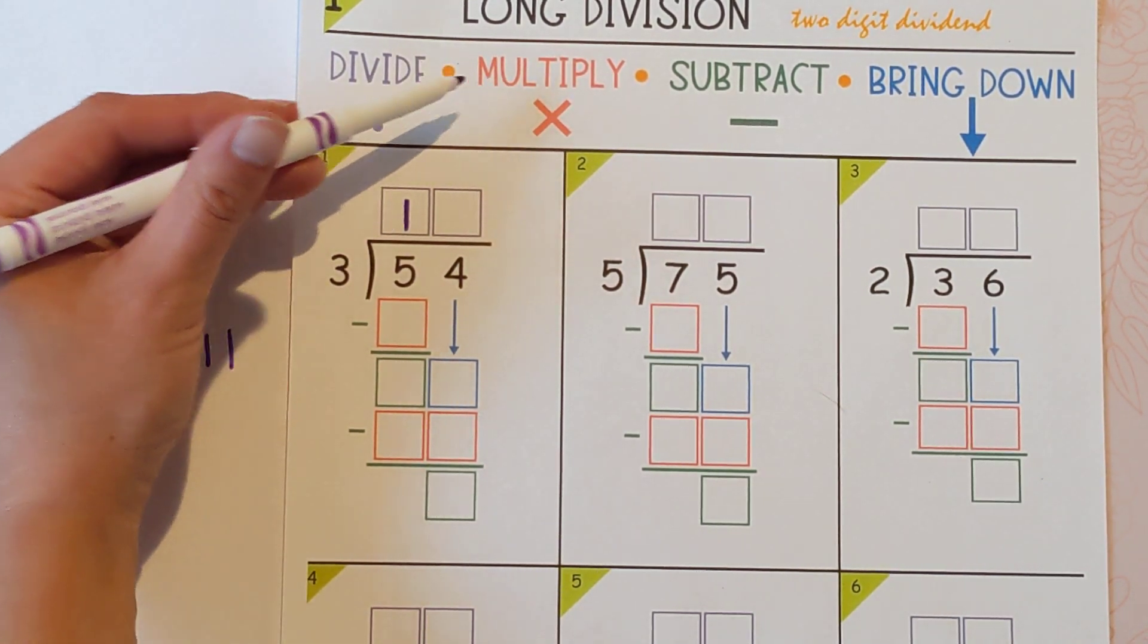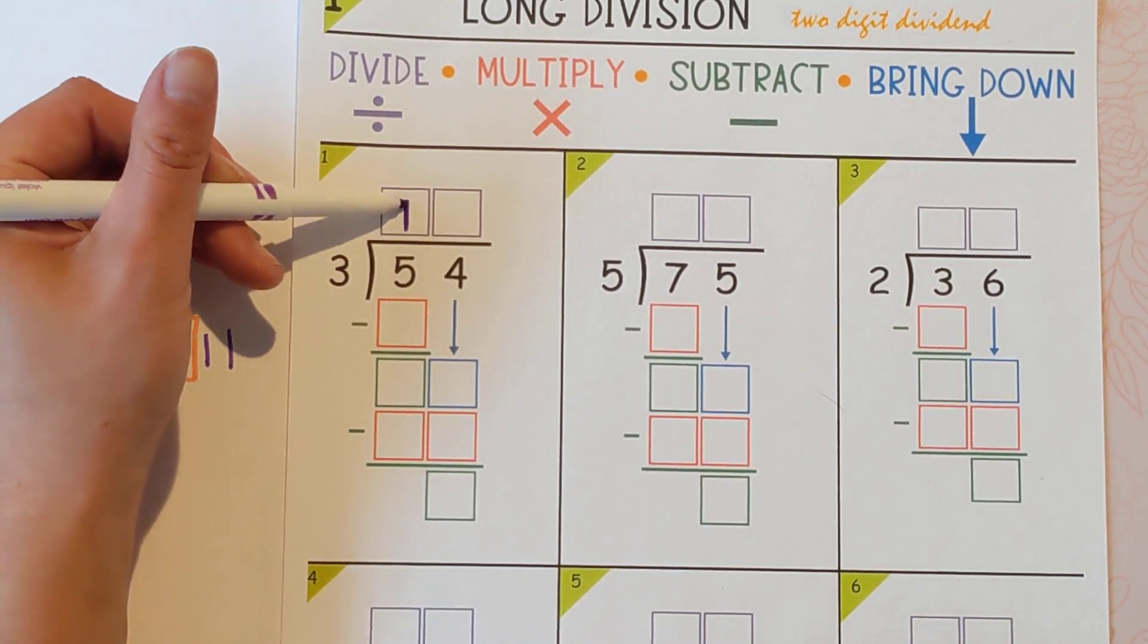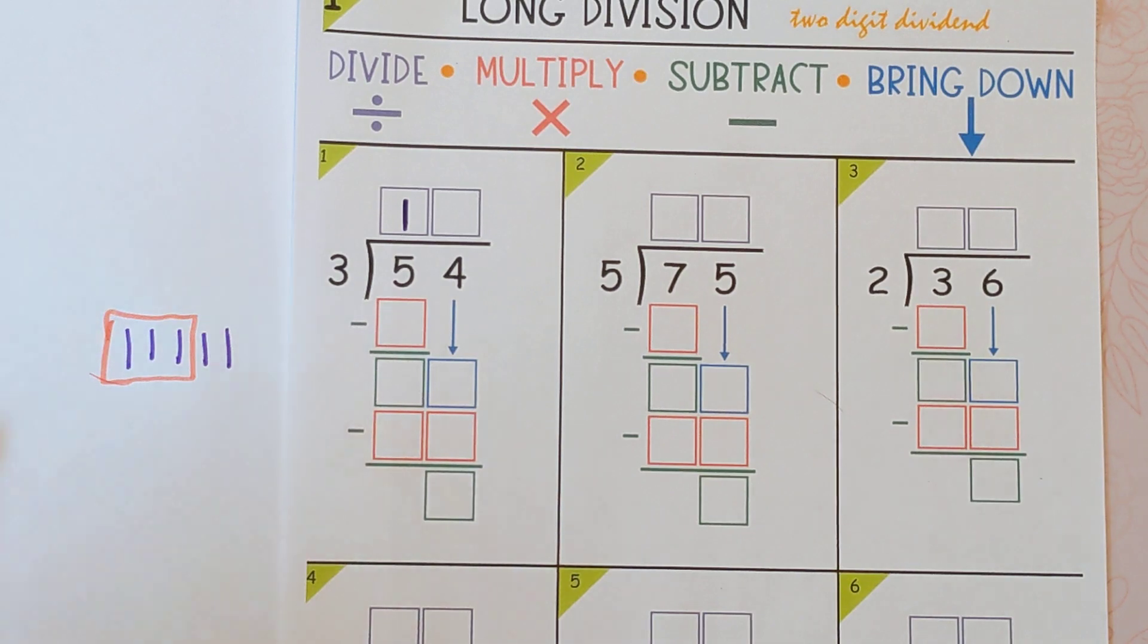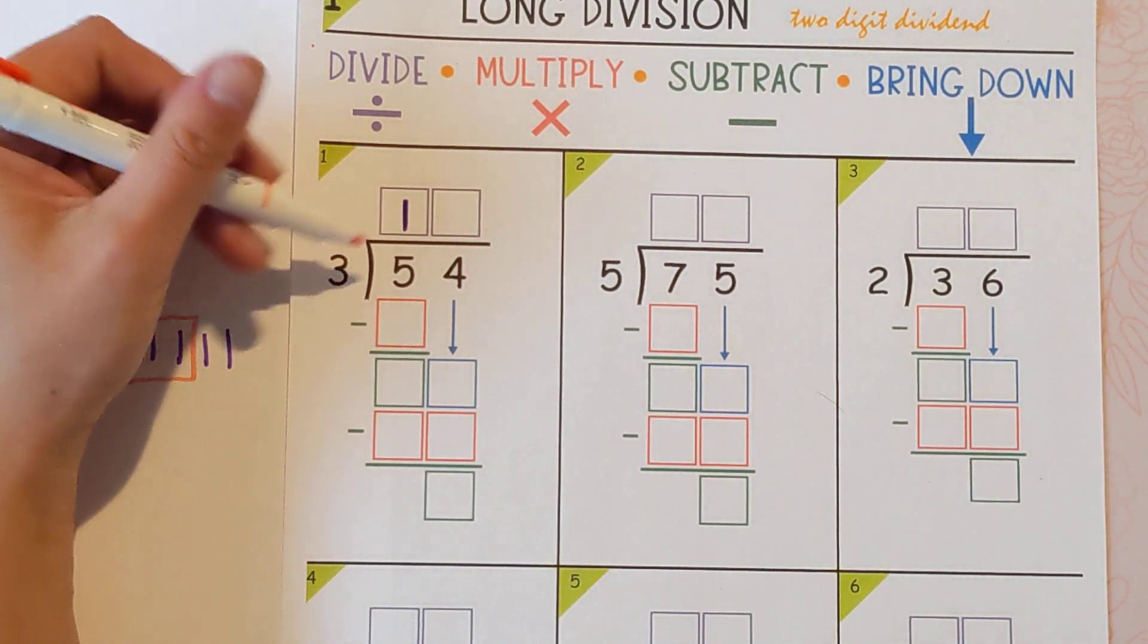The next step is to multiply. And you're going to take the last thing you touch, which is this one, and you're multiplying it by the three. So one times three is three.